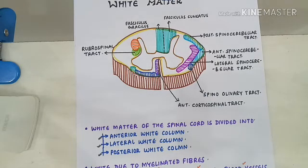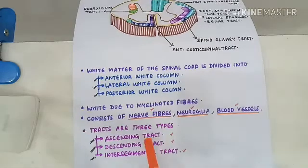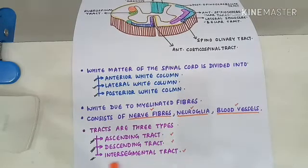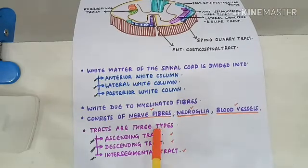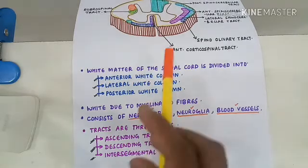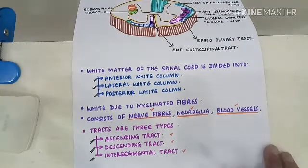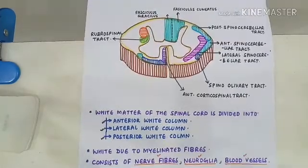The white matter consists of three types of tracts. The white matter of the spinal cord consists of three types of tracts: the ascending tracts, the descending tracts, and the intersegmental tracts.